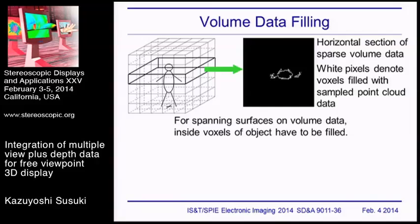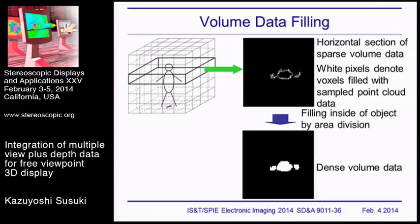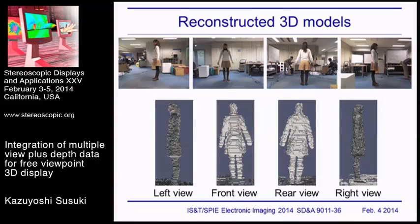The converted volume data is very sparse. This figure shows a horizontal section of the sparse volume data, where white pixels denote voxels filled with sampled point cloud data. For spanning surfaces on volume data, the inside of voxels of the object must be filled. So, filling inside the object is done by area division, resulting in dense volume data. Applying the discrete marching cubes method to this dense volume data, a 3D polygon model is obtained.